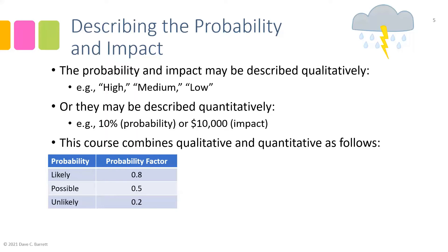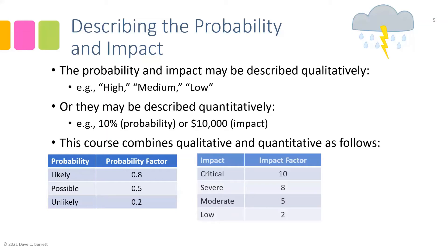Otherwise we'd get very few likely designations, since 80% is a very high bar — almost certain to happen. Similarly, the impact follows a parallel pattern where the project team selects whether the impact is critical, severe, moderate, or low. The textbook has descriptions of what each term means, and an impact factor is assigned: 10 for critical, 8 for severe, 5 for moderate, and 2 for low. We see here the conversion from qualitative to quantitative.